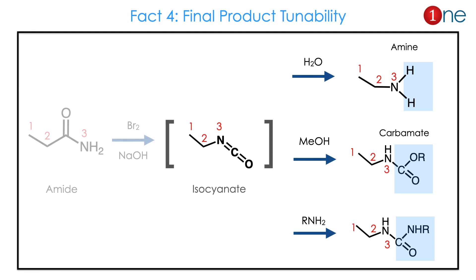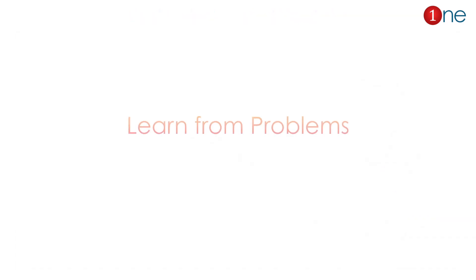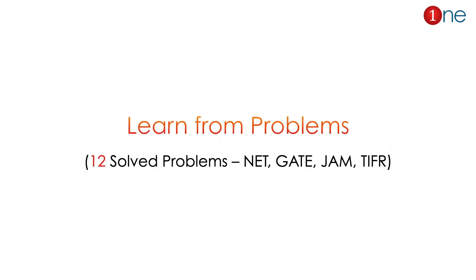Regarding the final product: the intermediate is common for all pathways, but by changing the second reactant you change the product. If you use water, the product is amine; if you use methanol, the product is carbamide; if you use an amine, the product is an alkylamide. So you can tune the product based on the second reagent.